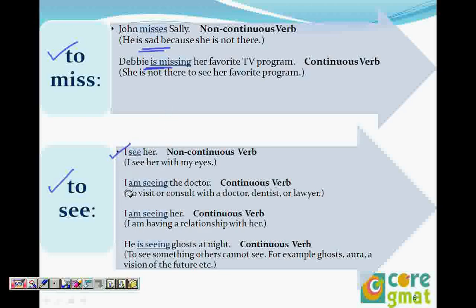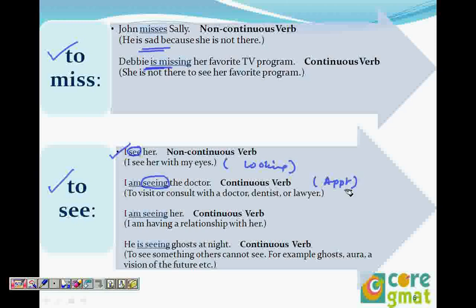'I see her' — that is like normal; I see her with my eyes, everybody does that, this is normal. 'I am seeing the doctor' — that means you have an appointment. 'I am seeing' means having an appointment. 'I see her' means just looking. 'I am seeing her' can also mean we have a relationship. And 'he is seeing ghosts at night' doesn't mean he has a relationship with ghosts — it means he can see ghosts, like a vision or aura.